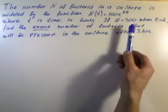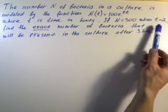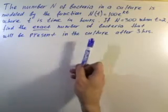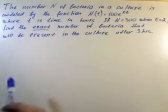If we know that we have 300 bacteria after two hours, find the exact number of bacteria that will be present in the culture after three hours.